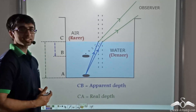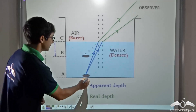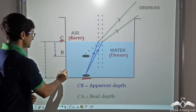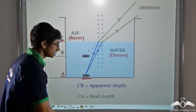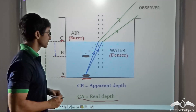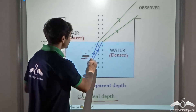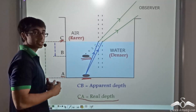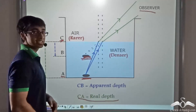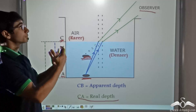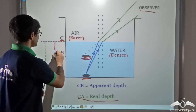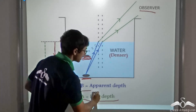Now let us familiarize ourselves with some technical terms. The depth at which the coin has actually been placed — that is, CA — is known as the real depth, because that is actually the depth where the coin is. And the depth at which the observer thinks the coin is, or the depth where the observer actually sees the coin, is known as the apparent depth. To the observer, it is apparent that the coin is actually at that place. So CB is known as the apparent depth.